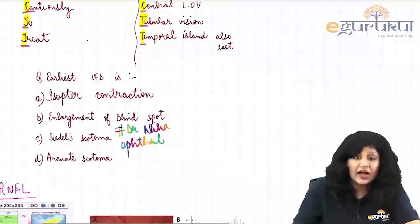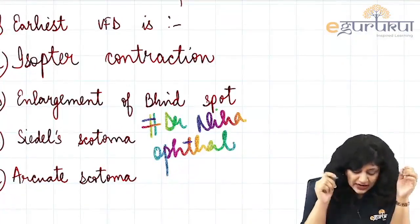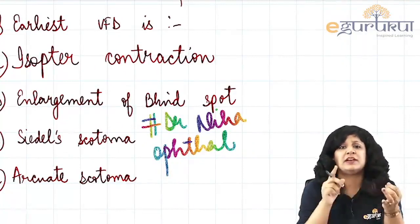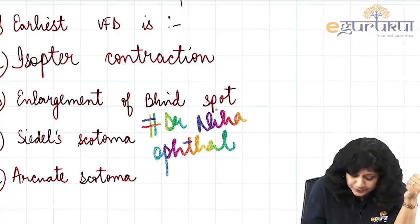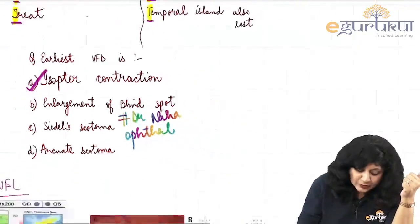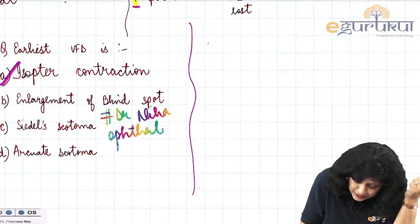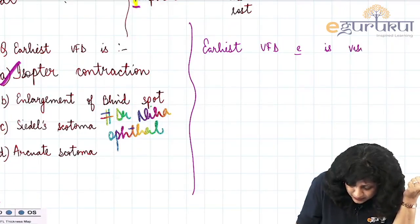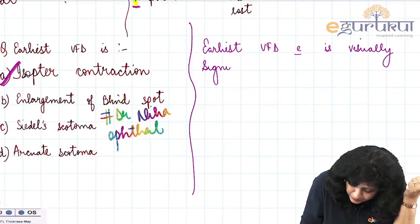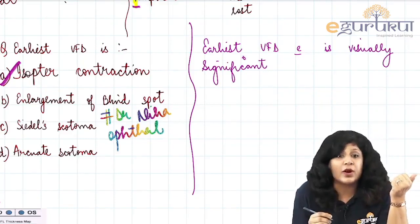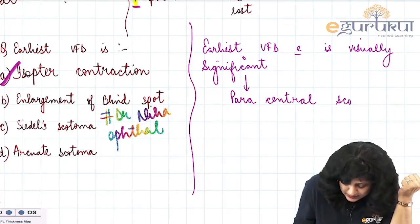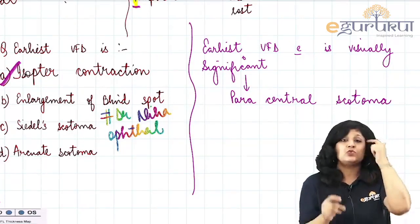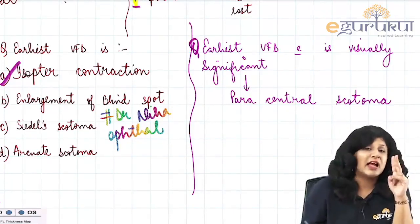If asked what is the earliest visual field defect, the answer is isopter contraction. But if asked the earliest visually significant visual field defect, the answer is not isopter contraction — it is the paracentral scotoma. These two questions look similar but are quite different, and the answers are also different.